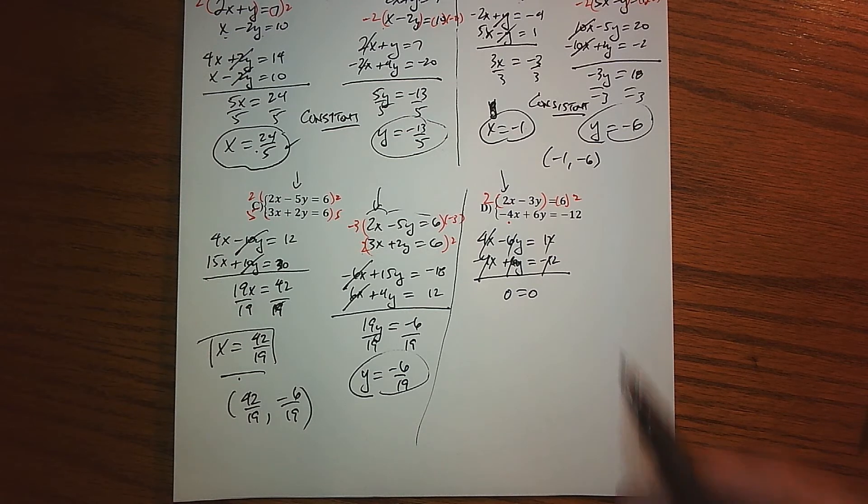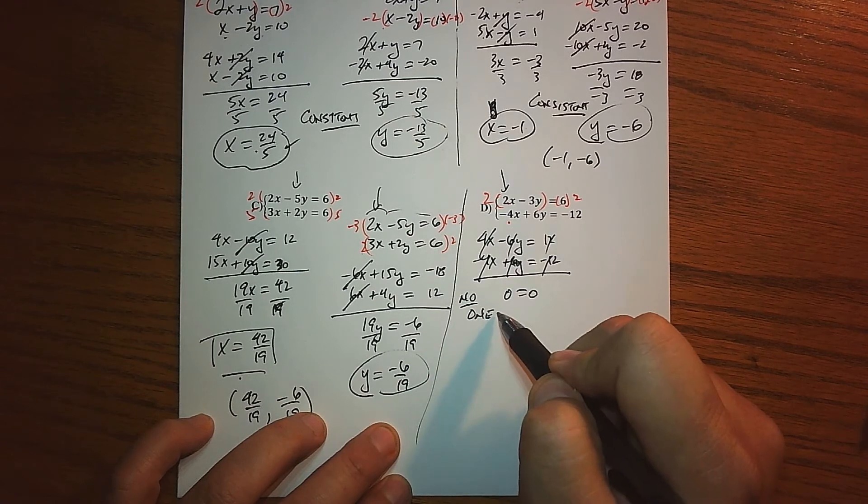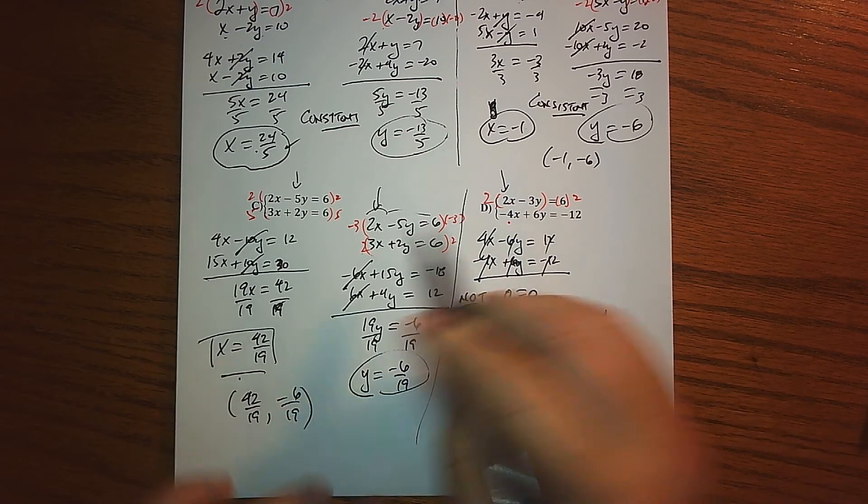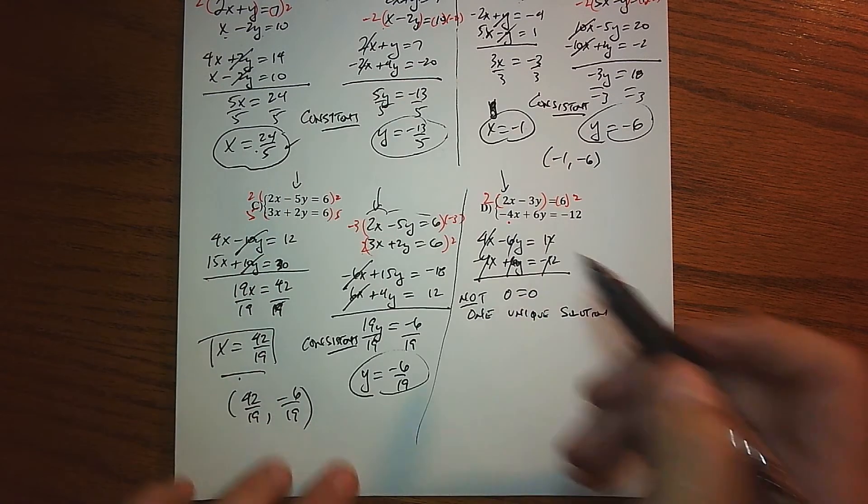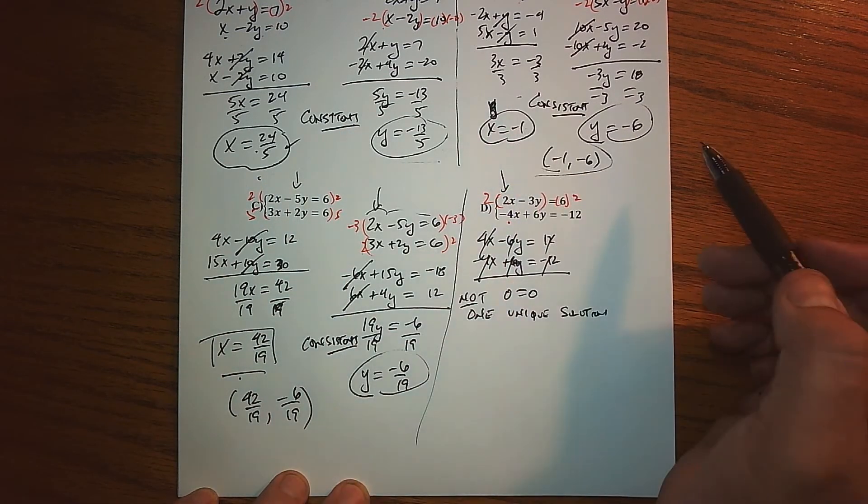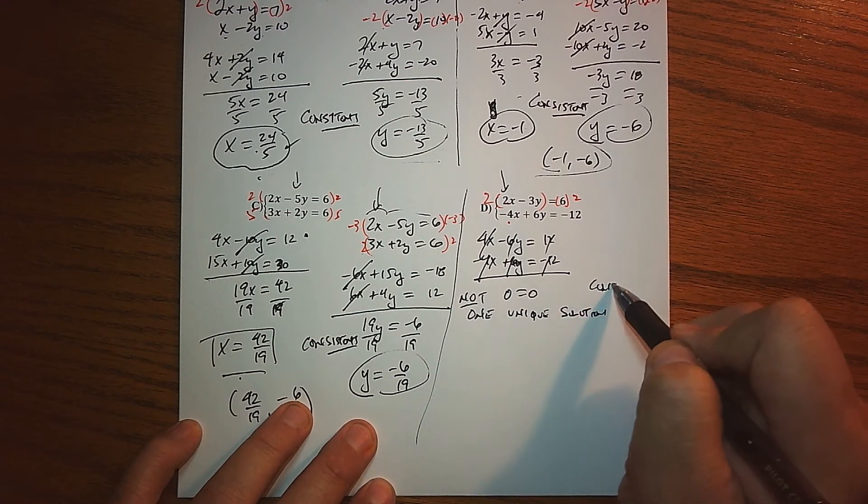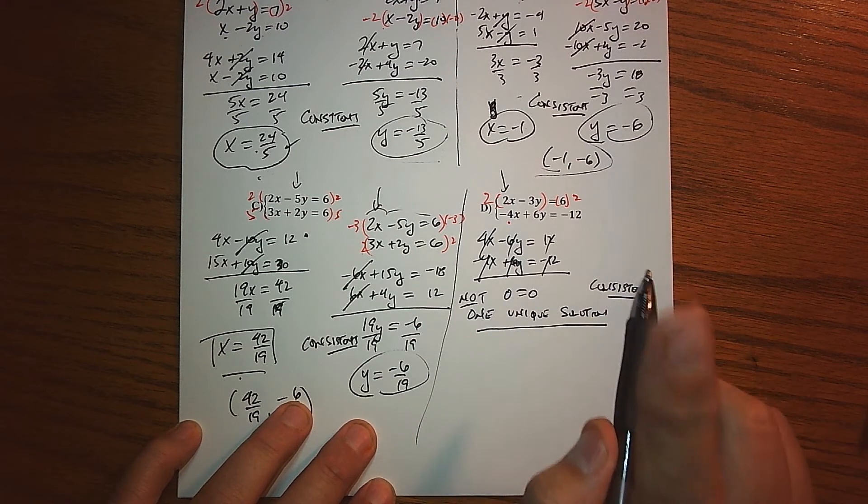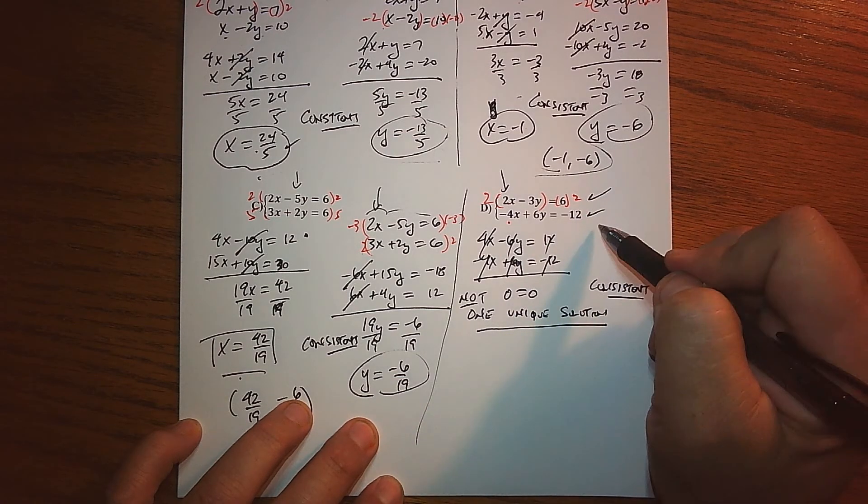Then when we combine like terms, it turns out that everybody cancels—we end up with zero equals zero. What does this mean? It means we don't have one unique solution. For example, the other three that I have on here, they're all consistent but they all have one unique ordered pair. This one is saying that there is a solution, so we are actually consistent here, but the system doesn't have one unique solution.